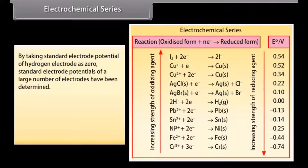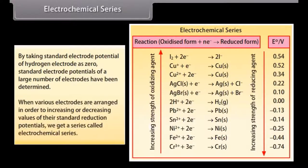Electrochemical series. By taking the standard electrode potential of the hydrogen electrode as zero, standard electrode potentials of a large number of electrodes have been determined. When various electrodes are arranged in order of increasing or decreasing values of their standard reduction potentials, we get a series called the electrochemical series.